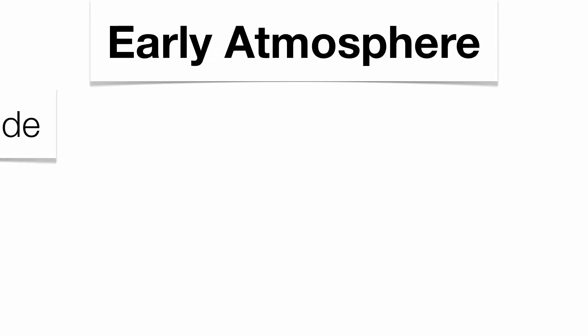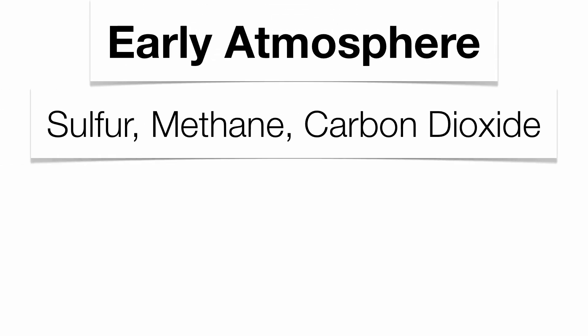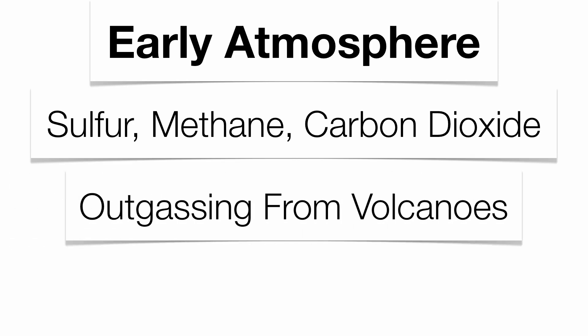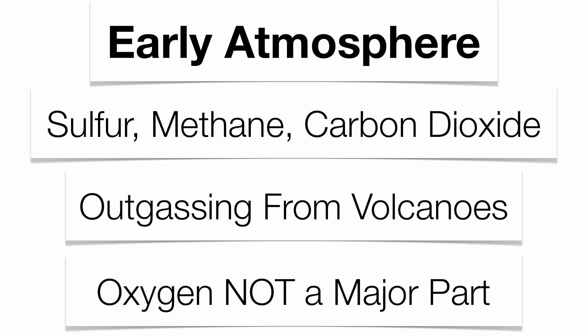The atmosphere today is very different from what it was like 2 billion years ago. There were a lot of noxious gases like sulfur and methane in the atmosphere, unlike today, which is mostly nitrogen and oxygen. Those gases basically came through the violent volcanic eruptions that occurred during the early years of our Earth. That process, called outgassing, released a tremendous amount of noxious gases into the atmosphere. Oxygen was not a major part of that early atmosphere, very simply because there was not a large abundance of plants during that time.